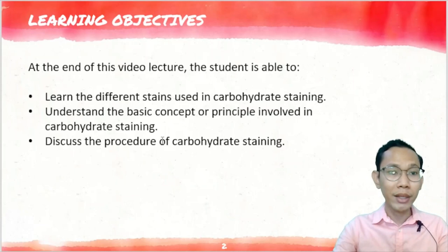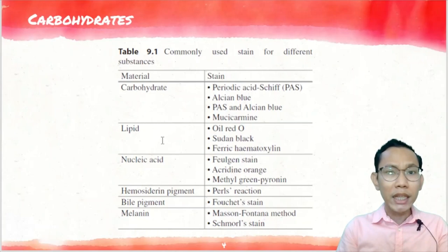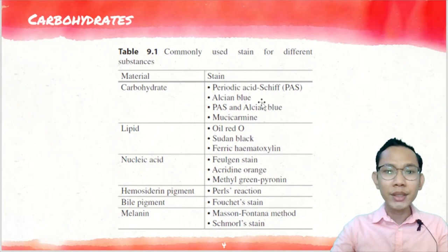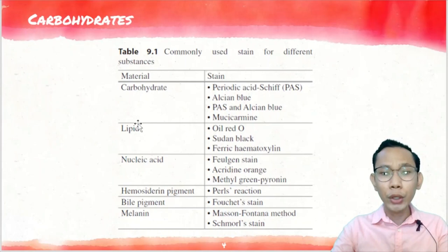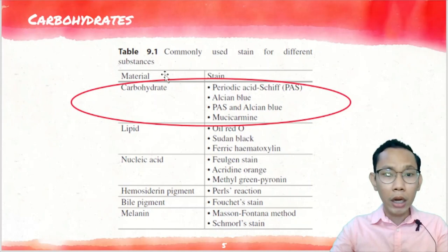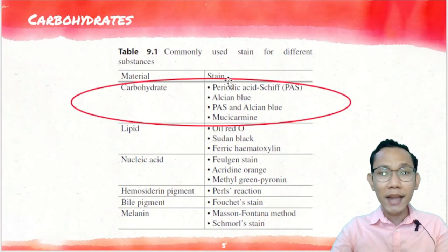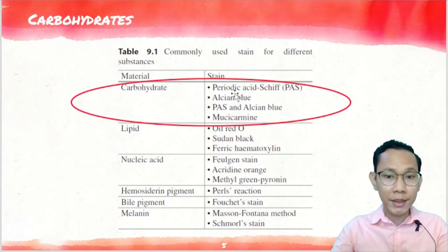As we all know, other than your routine hematoxylin and eosin stain, there are various special stains that are essential and part of routine laboratory work. These are the commonly used stains for different substances: your carbohydrate, your lipid, your nucleic acid, your hemosiderin pigment, your bile pigment, and your melanin. For this discussion, we will be focusing on carbohydrates. The four stains we will explain are: your Periodic Acid-Schiff or PAS stain, your Alcian Blue, the combination of PAS and Alcian Blue, and lastly, your Mucicarmine.